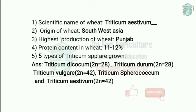Triticum durum is a very old and best wheat for drought conditions, and vermicelli is made from this type. Next is Triticum vulgare, 2N equal to 42, also called bread wheat, used for rainfed conditions. Then Triticum sphaerocoum, which is less commercially cultivated. Finally, Triticum aestivum, 2N equal to 42, is used for making chapati.